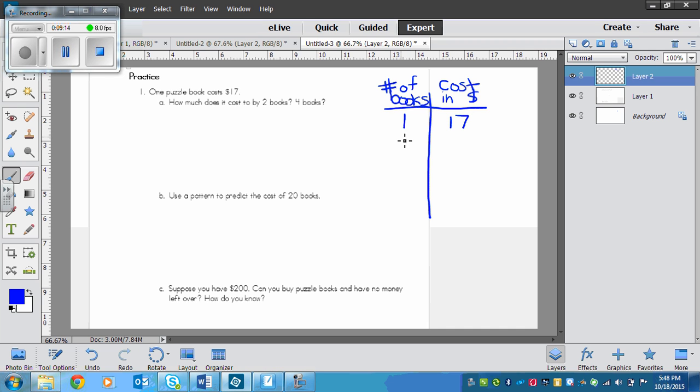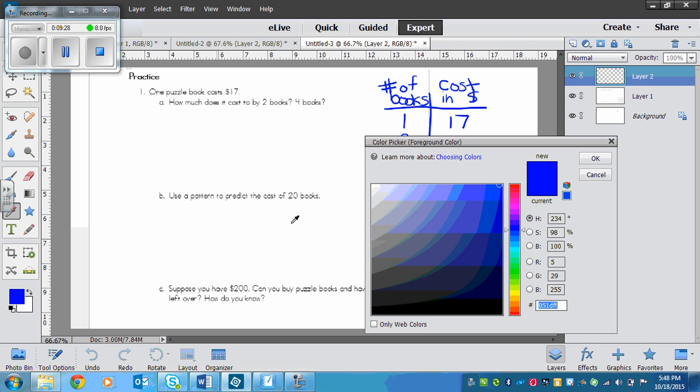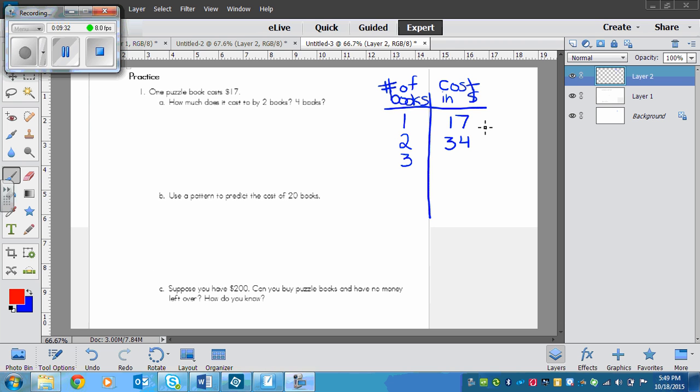So 2 books would be $17 plus $17, so that would be $34. 3 books would be $51. So plus $17, and then plus another $17.